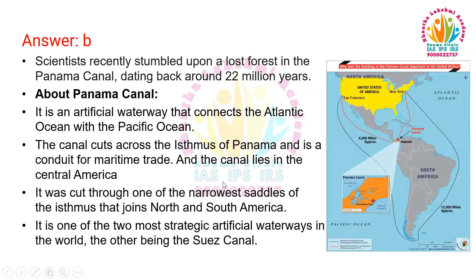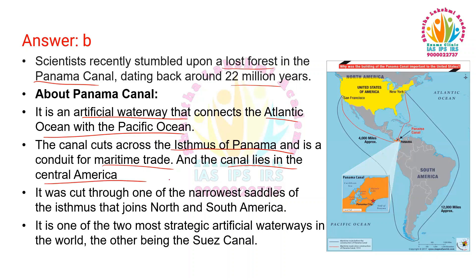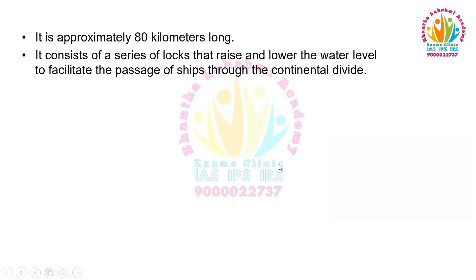Scientists recently stumbled upon a lost forest in the Panama Canal dating back around 22 million years. The Panama Canal is an artificial waterway that connects the Atlantic Ocean with the Pacific Ocean. The canal runs across the Isthmus of Panama and is a conduit for maritime trade. The canal lies in Central America — it was cut through one of the narrowest saddles of the Isthmus joining North and South America. It is one of the two most strategic artificial waterways in the world, the other being the Suez Canal. It is approximately 80 kilometers long and consists of a series of locks that raise and lower the water level to facilitate the passage of ships through the Continental Divide.